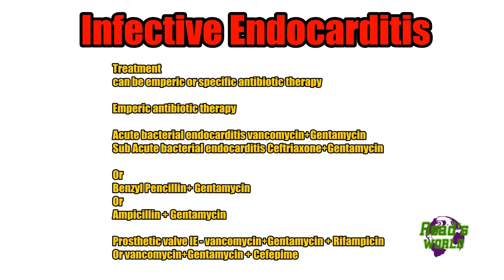Treatment can be empiric or specific. For empiric antibiotic therapy, acute bacterial endocarditis is treated with vancomycin plus gentamicin. For subacute bacterial endocarditis, the regimen is ceftriaxone plus gentamicin, or benzylpenicillin plus gentamicin, or ampicillin plus gentamicin.